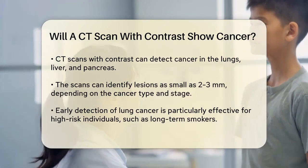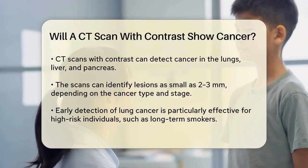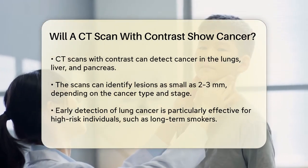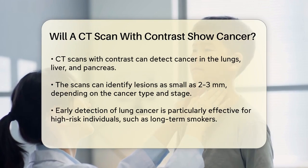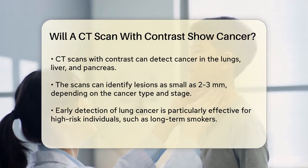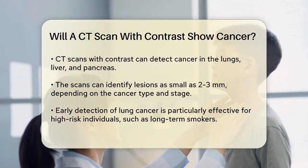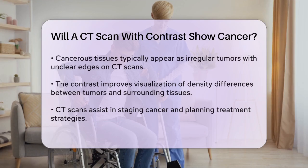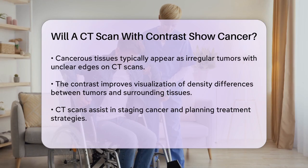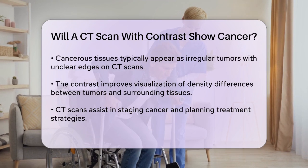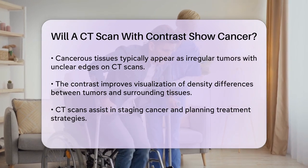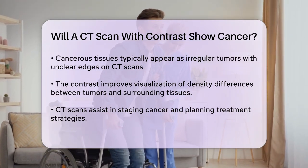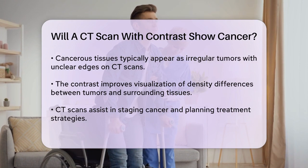On a CT scan, cancerous tissues often appear as irregularly shaped tumors with ill-defined margins. These tumors can vary in density compared to the surrounding tissue and may invade adjacent tissues and structures. The contrast helps in visualizing these differences, making it easier for radiologists to identify potential cancers.